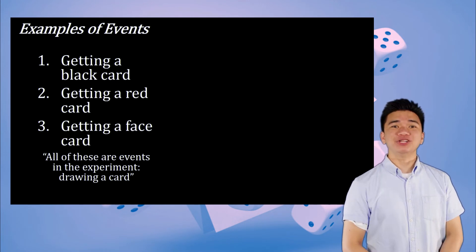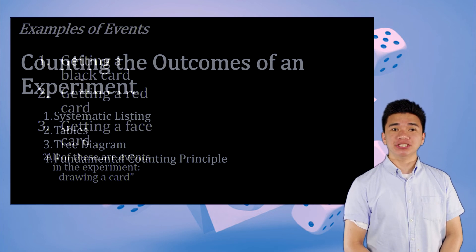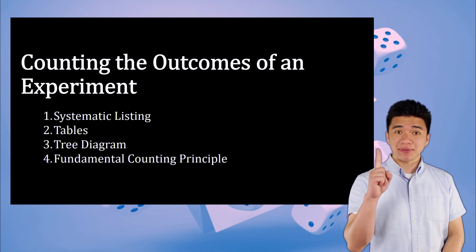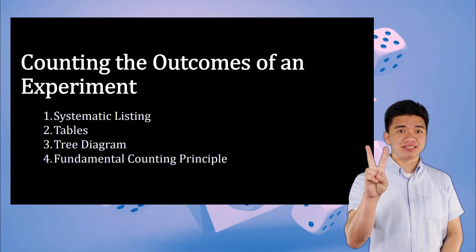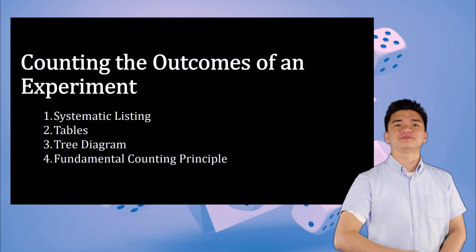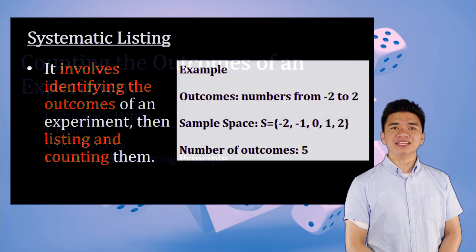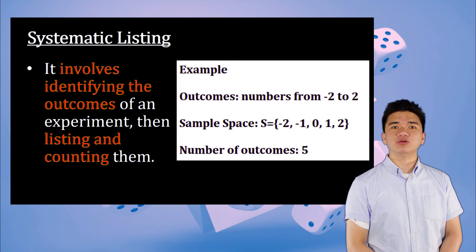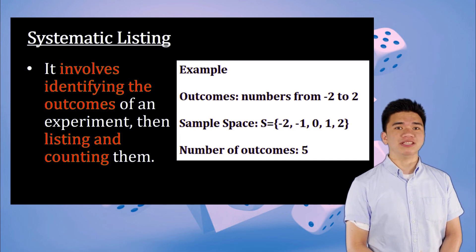Now that we have discussed the key concepts of probability, we can transition to counting the outcomes of an experiment using systematic listing, tables, tree diagrams, and fundamental counting principle. Systematic listing involves identifying the outcomes of an experiment, then listing and counting them.